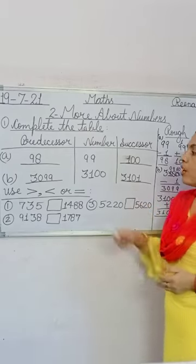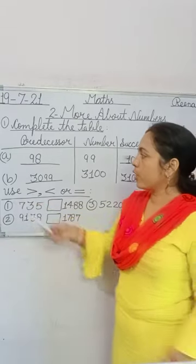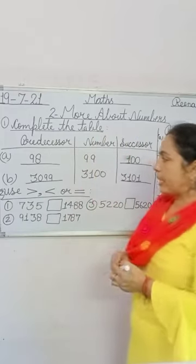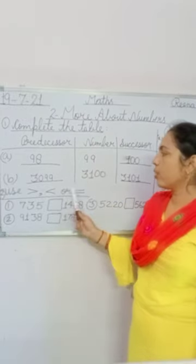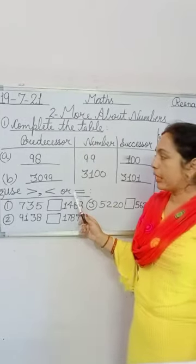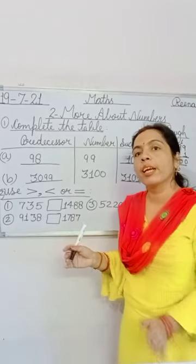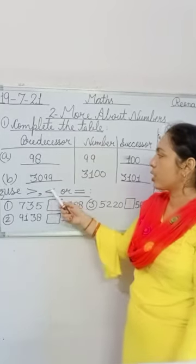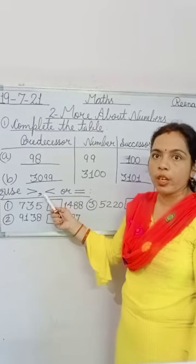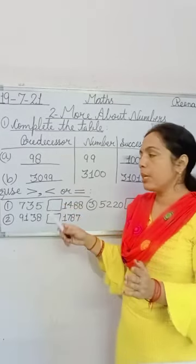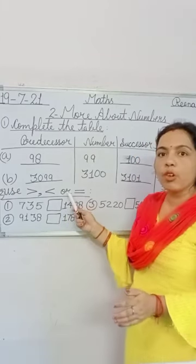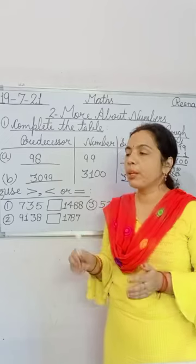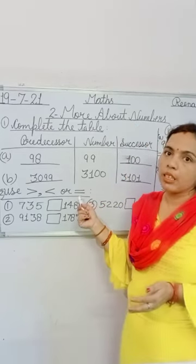In question 2, you need to use greater than, less than, or equal to signs. Greater than means the mouth of the sign opens toward the larger number and closes toward the smaller number. When both numbers are the same, you put the equal to sign — agar dono numbers same hain, toh equal to ka sign lagega.